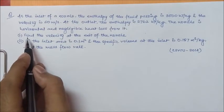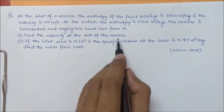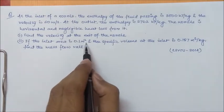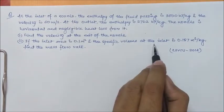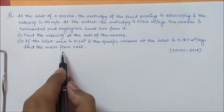So, the question wants us to find first, the velocity at the exit of the nozzle. Second, if the inlet area is 0.1 m² and the specific volume at the inlet is 0.187 m³ per kg, the mass flow rate.